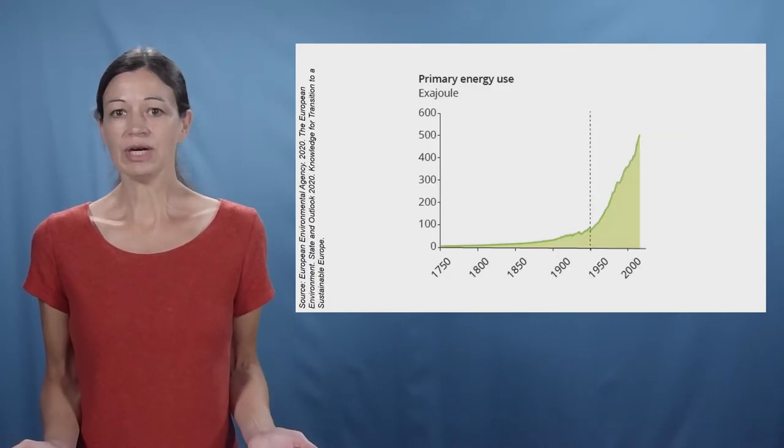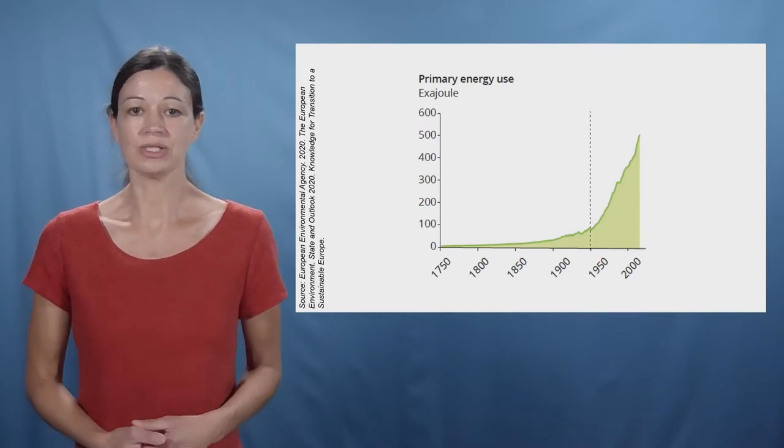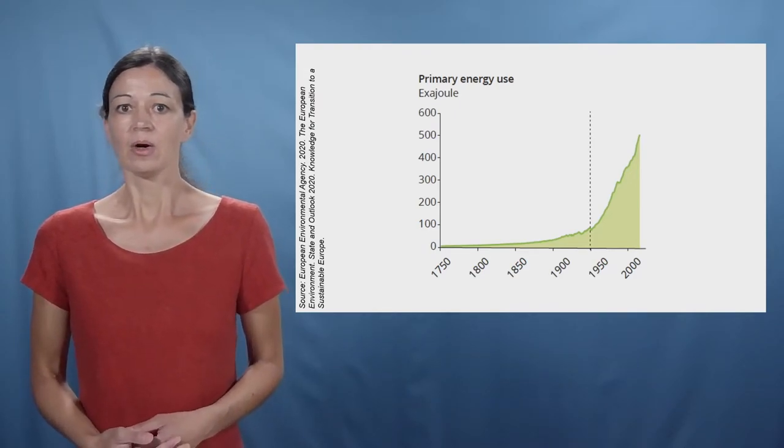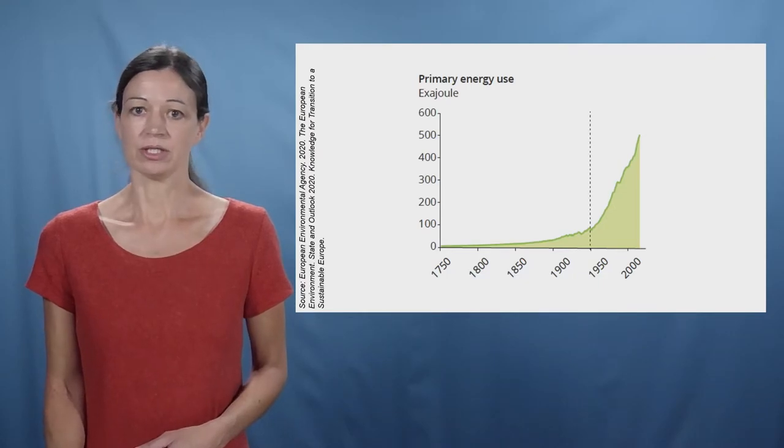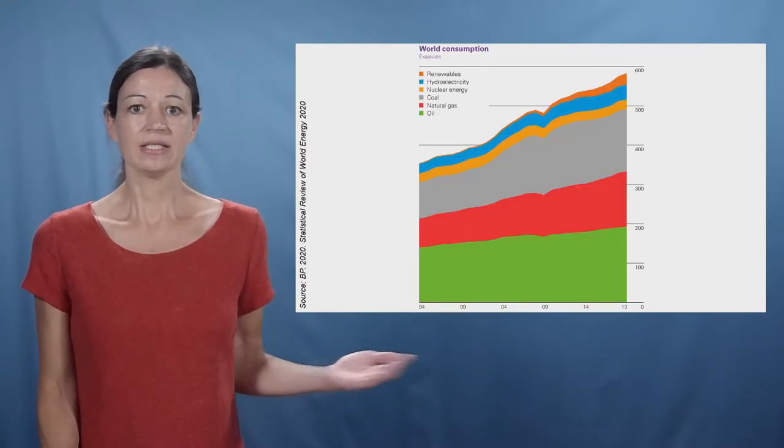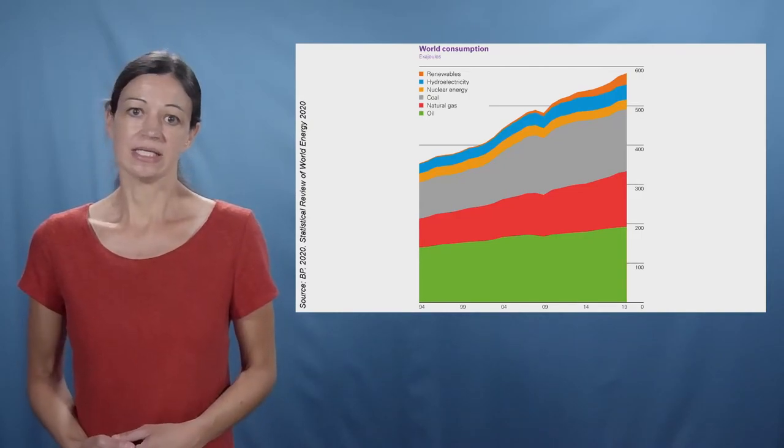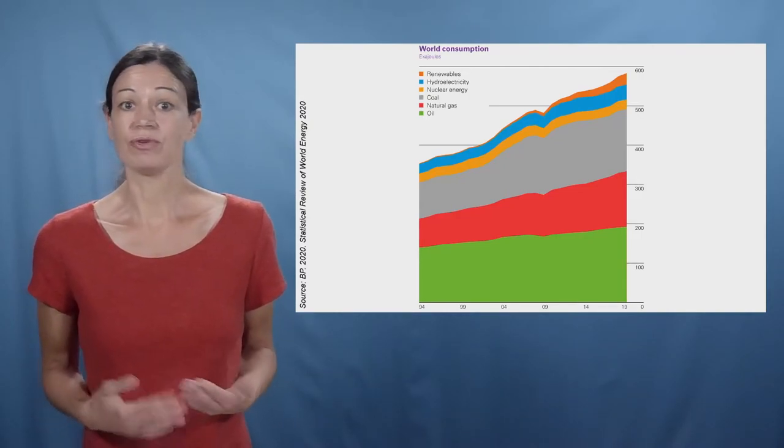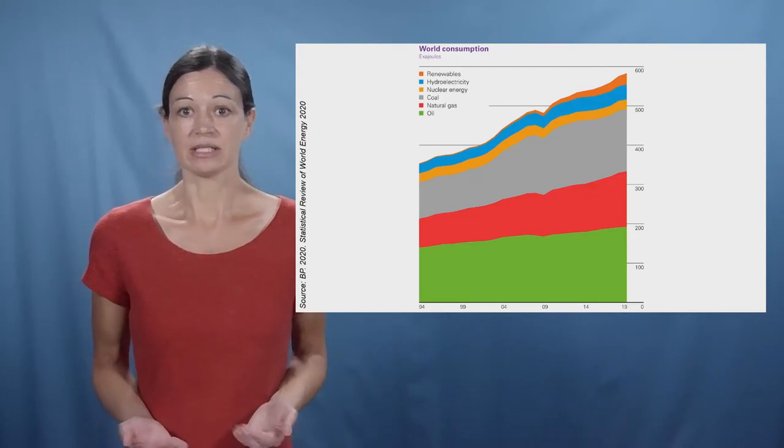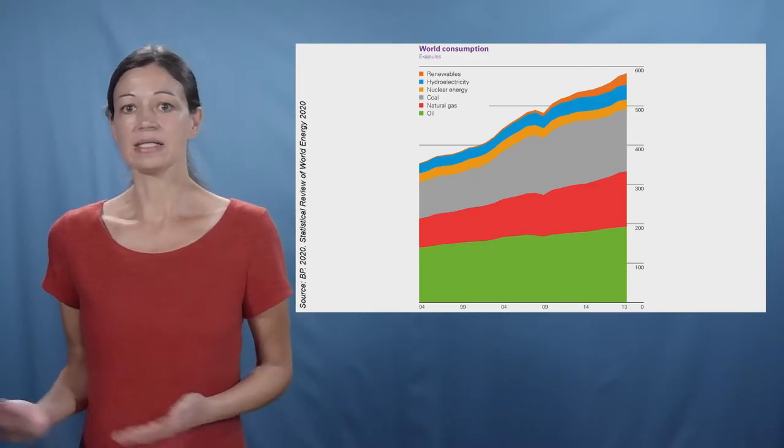One crucial factor in terms of resource use is energy. With a growing world population, we use more and more energy. As you can see here, between 1994 and 2019 energy consumption from all sources increased, including oil, gas and coal.